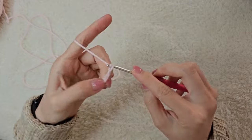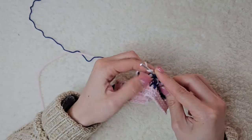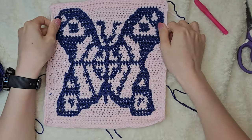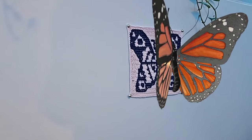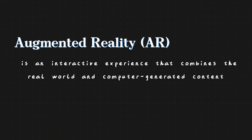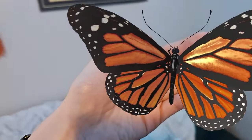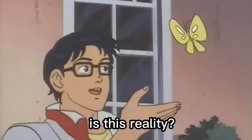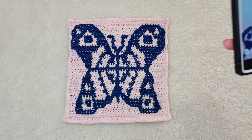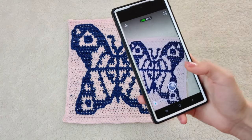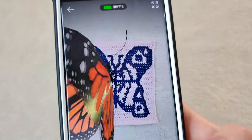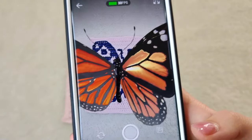First up is this monarch butterfly spawn point. It's a wall tapestry that makes a monarch butterfly appear when you view it through augmented reality. Augmented reality is an interactive experience that combines the real world and computer generated content, unlike virtual reality which is a totally artificial environment. Right now I'm viewing the tapestry through my phone and the butterfly is overlaid over top of it from the view of my phone.